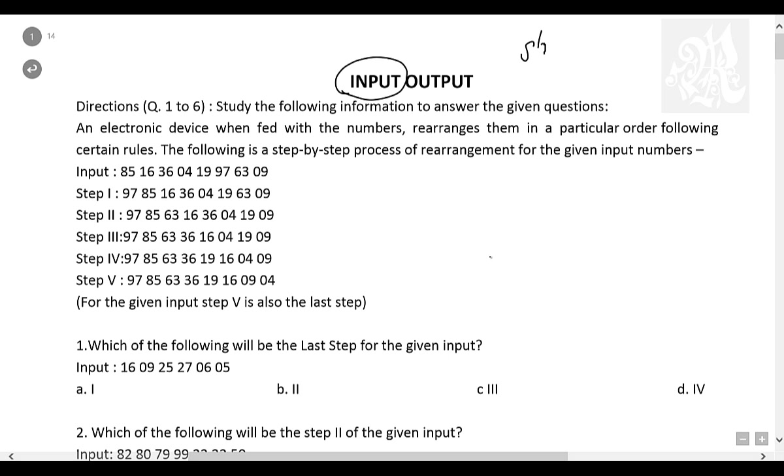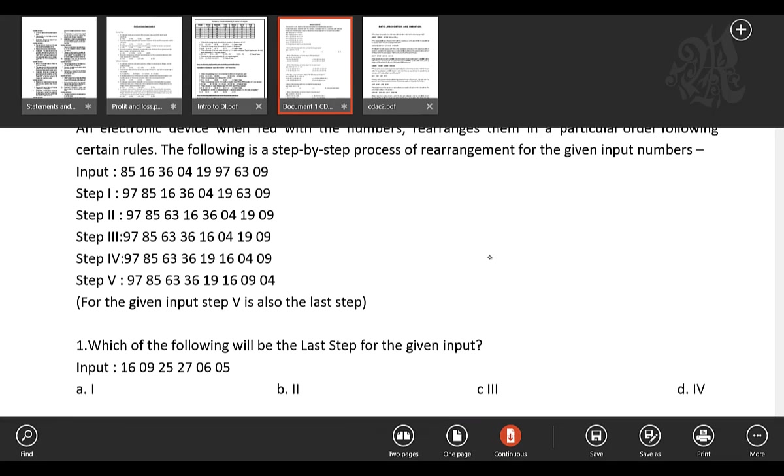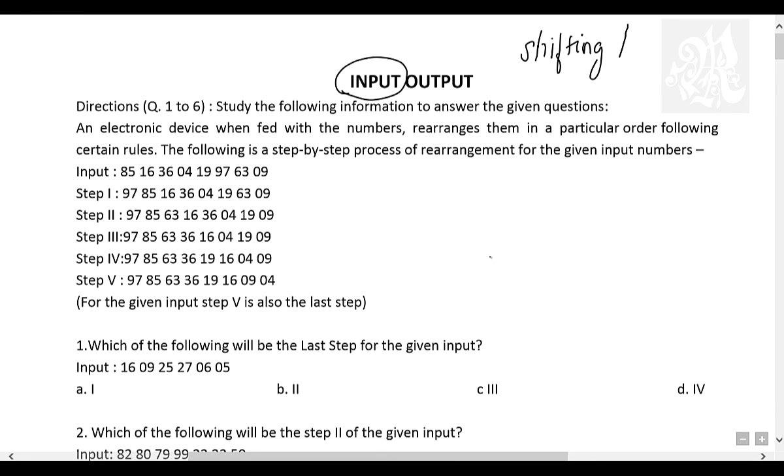There can be two types of input-output. One is called the shifting input-output, which comprises of 90% of the questions, shifting. The other one is called swapping. We'll not talk swap right now, we'll just talk shifting right now. So shifting and swapping are two important input-output types.